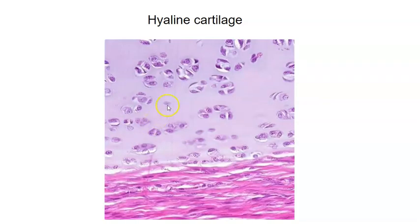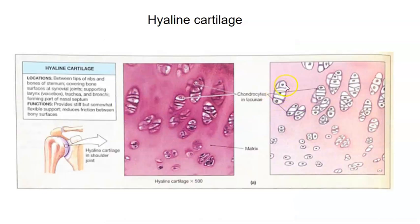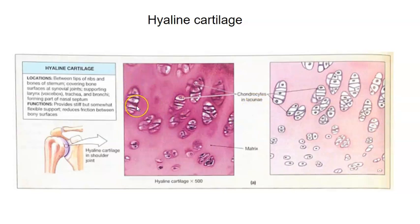Here's more hyaline cartilage — notice the glassy appearance. The cells of cartilage are called chondrocytes. 'Chondro' means cartilage and 'cyte' means cell. These chondrocytes sit in little craters called lacunae — one is a lacuna. The chondrocytes are cells found within cartilage, sitting in lacunae.